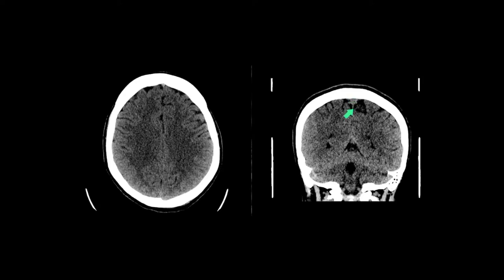You can see on the coronal slice that this is the falx cerebri. It splits into a right tentorial leaflet and a left tentorial leaflet. As a result of these meningeal reflections you are left with an infratentorial brain and a supratentorial brain. The falx divides the supratentorial brain into the left cerebral hemisphere and the right cerebral hemisphere. The infratentorial brain comprises the left cerebellar hemisphere, right cerebellar hemisphere and brainstem.